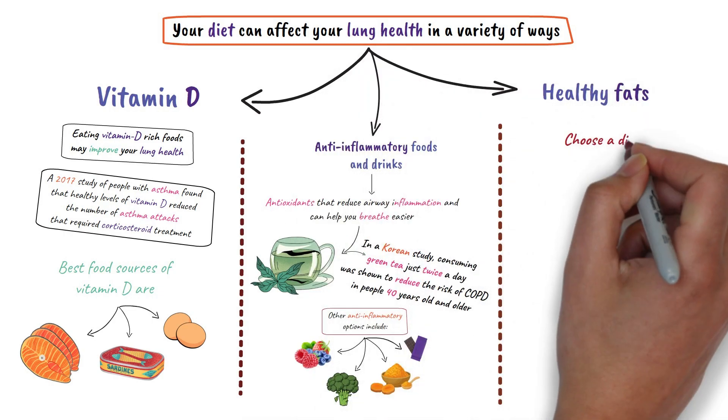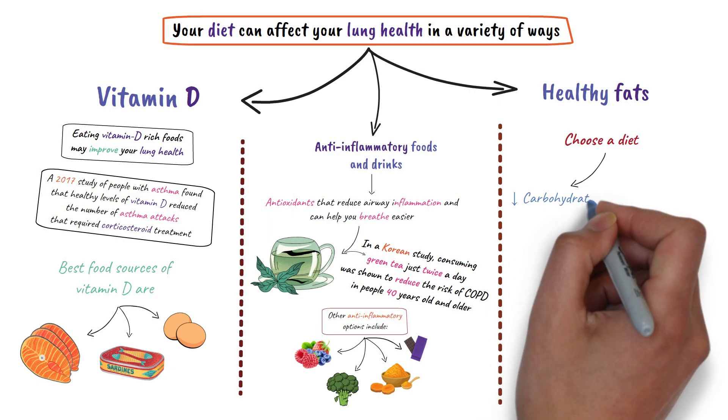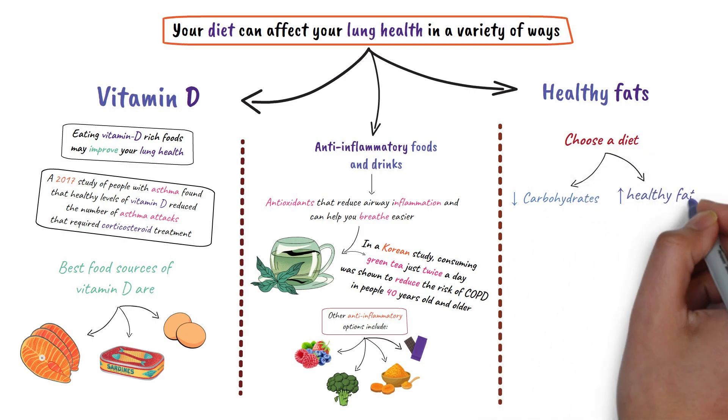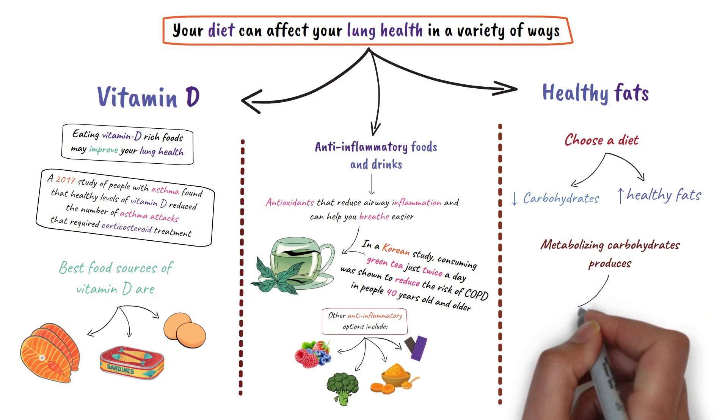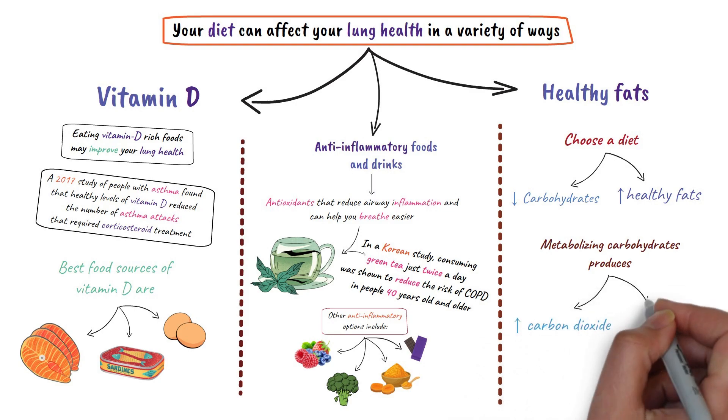You can also choose a diet that's lower in carbohydrates and higher in healthy fats. Metabolizing carbohydrates produces more carbon dioxide and uses more oxygen than metabolizing fats.